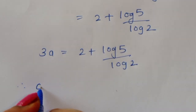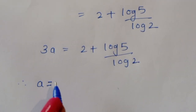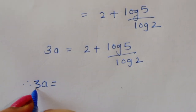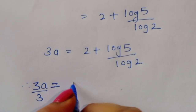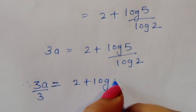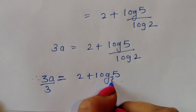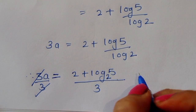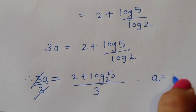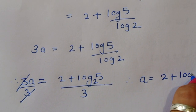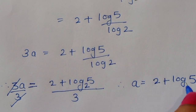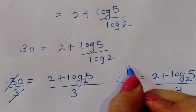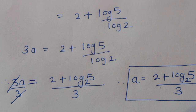Now we have to find the value of a, so dividing both sides by 3: 3a divided by 3 is equal to 2 plus log of 5 to the base 2 divided by 3. The 3 cancels, therefore the value of a is equal to 2 plus log base 2 of 5, all divided by 3. Now let's verify if this is correct.